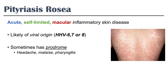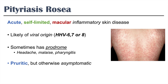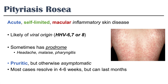In this condition itself, we see the rash, but it is also pruritic, but otherwise asymptomatic. In most cases, Pitoriasis Roja will resolve on its own within 4 to 6 weeks, but it can last for months. So again, it's acute and it's self-limited generally.